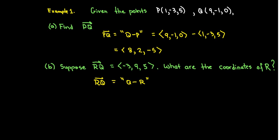Let's just call the components of OR ABC, so the position vector for R. I'll take 9, negative 1, 0, subtract minus ABC. That'll equal my given vector, negative 3, 9, 5.